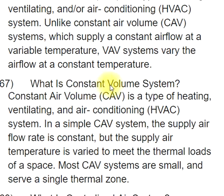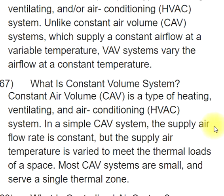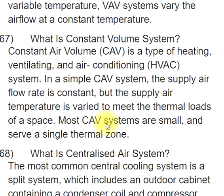Q67: What is constant volume system? Constant air volume (CAV) is a type of HVAC system. In a simple CAV system, the supply air flow rate is constant, but the supply air temperature is varied to meet the thermal loads of a space. Most CAV systems are small and serve a single thermal zone.